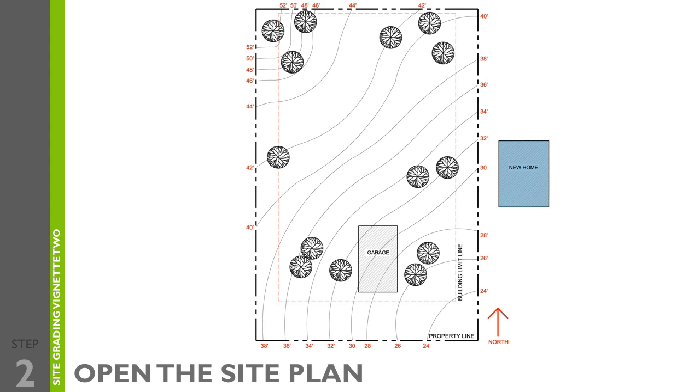For step two, open the site plan and review all the important features, such as contour intervals, locations of any elements that need to be protected, and the direction of the slope. Make sure you note these items in your note chart on your scrap paper.